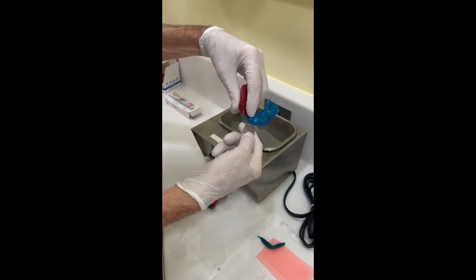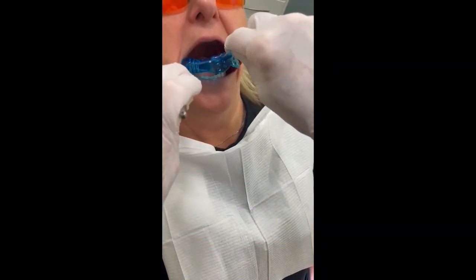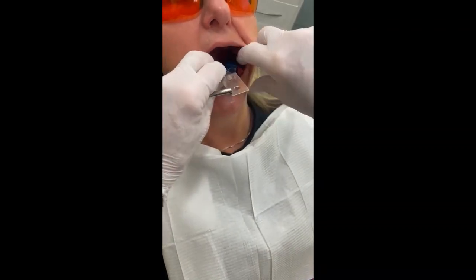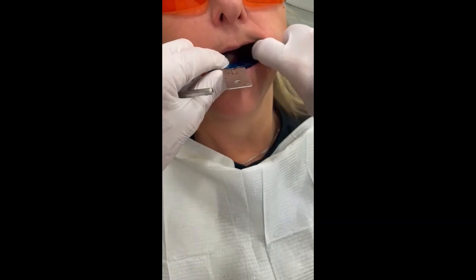So put it in the tray, get it roughly in the right shape. Seat the tray down on the teeth, and you just push down and ask the person to stick their tongue out.